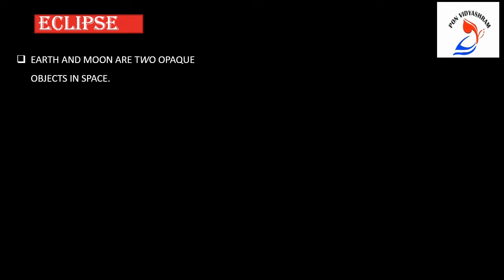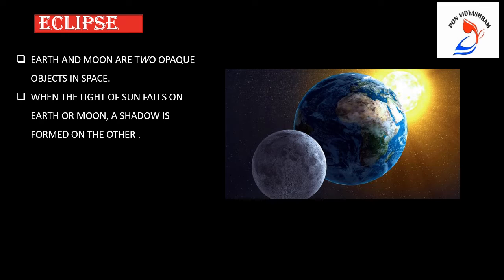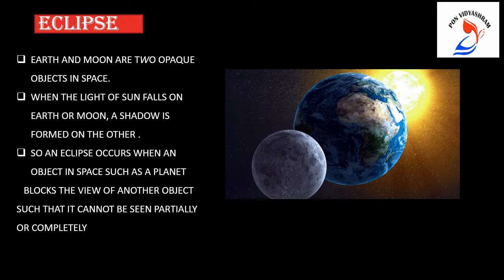Now, we are going to learn about eclipse. Earth and moon are two opaque objects in space. As you see in the picture, when the light of the sun falls on earth or moon, a shadow is formed on the other. So, an eclipse occurs when an object in space, such as a planet, blocks the view of another object such that it cannot be seen partially or completely.